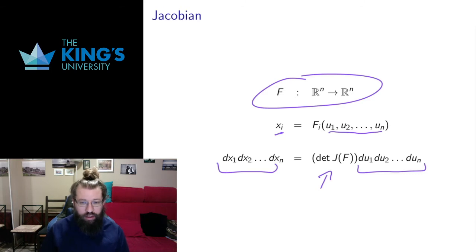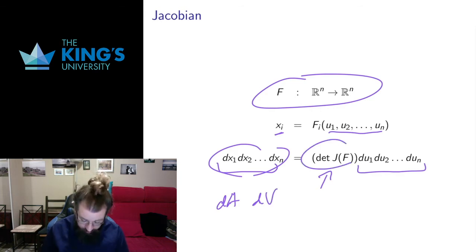Now what you should think of here is matrices, determinants of matrices, measure the effect on area and volume. And this kind of thing, I called dA or dV depending on the dimension, it's kind of an infinitesimal area or volume. So this makes sense as a change in area or volume. It tells us how the infinitesimal area and volume in the new variables and the old variables relate to each other.